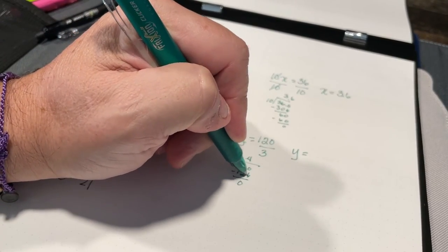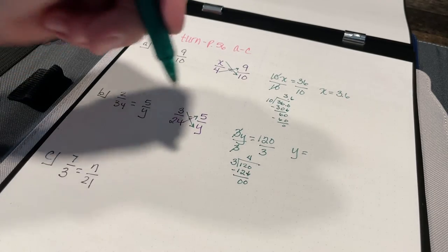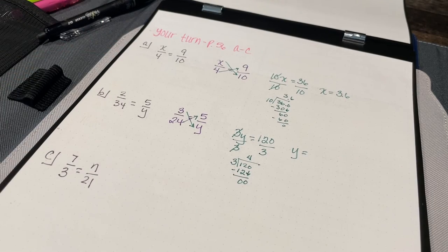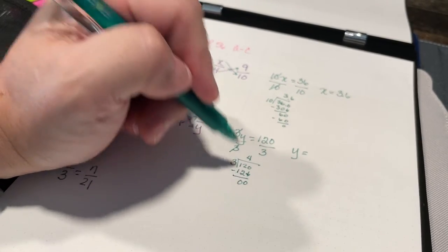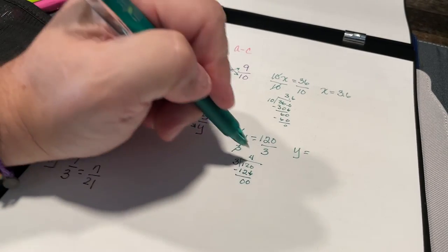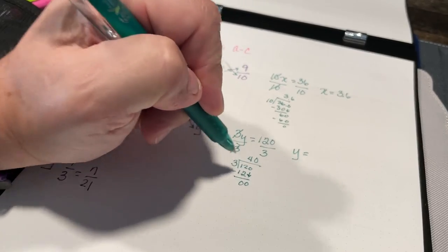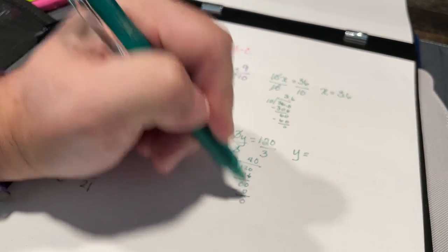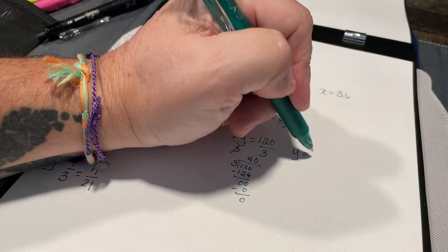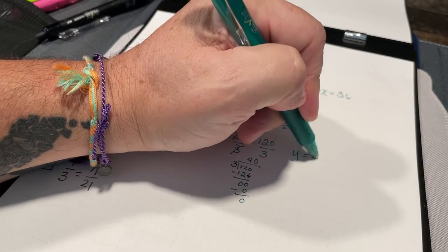Now I still have this other 0, so I have to still deal with it. I can't just say, okay, 3 goes into 12 four times. I've got to keep going. So I'm going to ask myself, how many times does 3 go into 0? Well, that's 0 times. 0 times 3 is 0. And so I wind up with y equals 40.